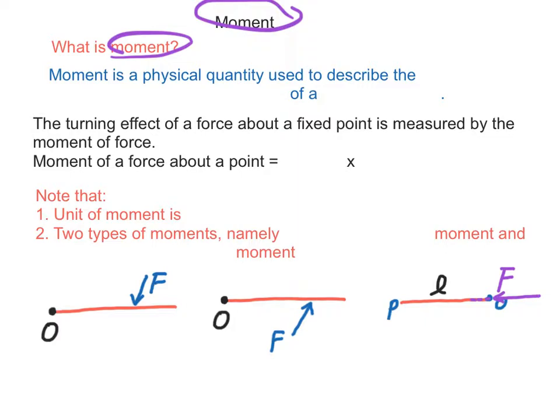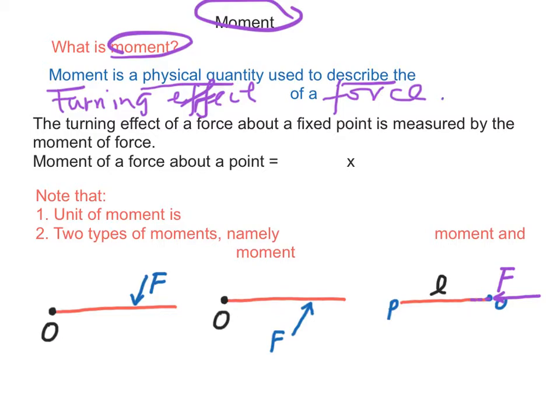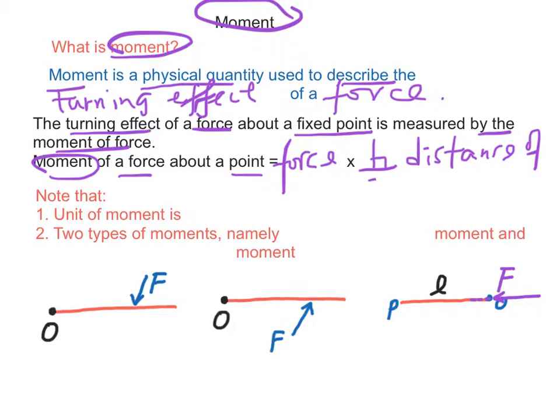Moment. What is moment? Moment is a physical quantity used to describe the turning effects of a force. The turning effect of a force about a fixed point is measured by the moment of a force. Mathematically, the moment of a force about a point is equal to the product of force times the perpendicular distance of the force from the point.